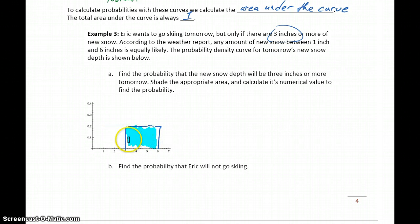So this shaded area, this region under the curve, represents the probability that he's going to go skiing tomorrow, that there will be enough new snow. So the probability that he will go skiing or the probability that there will be enough snow is found by calculating this area, which for this uniform distribution is just a rectangle.